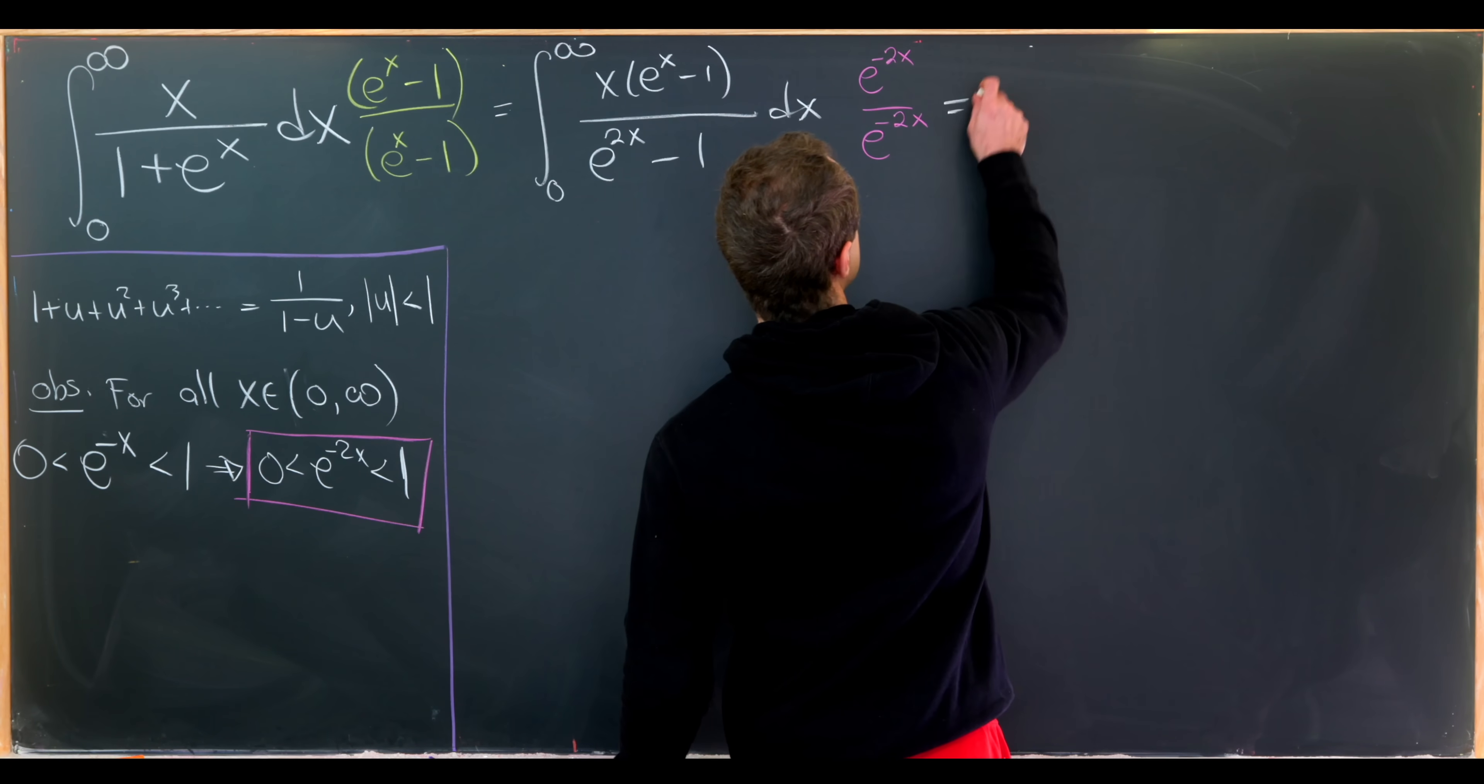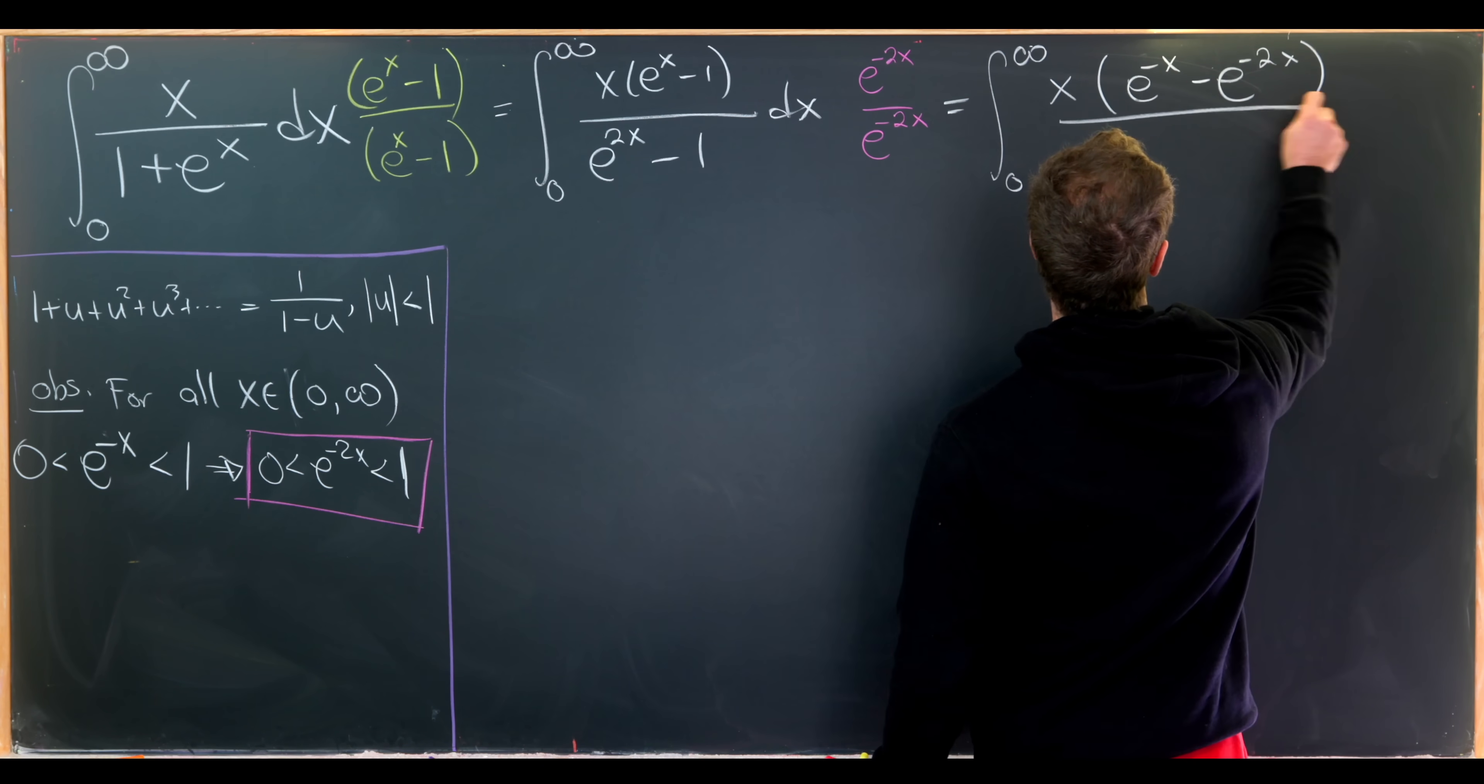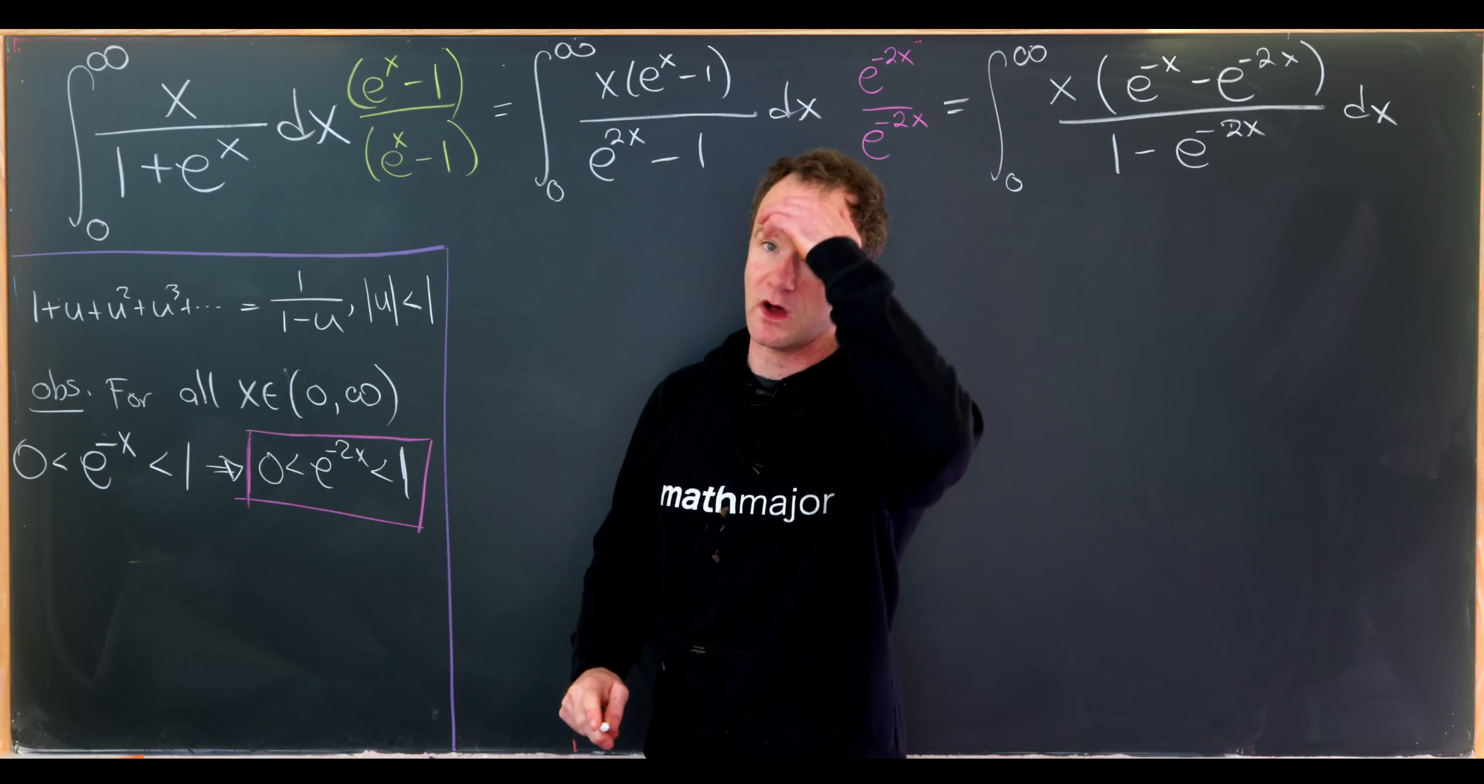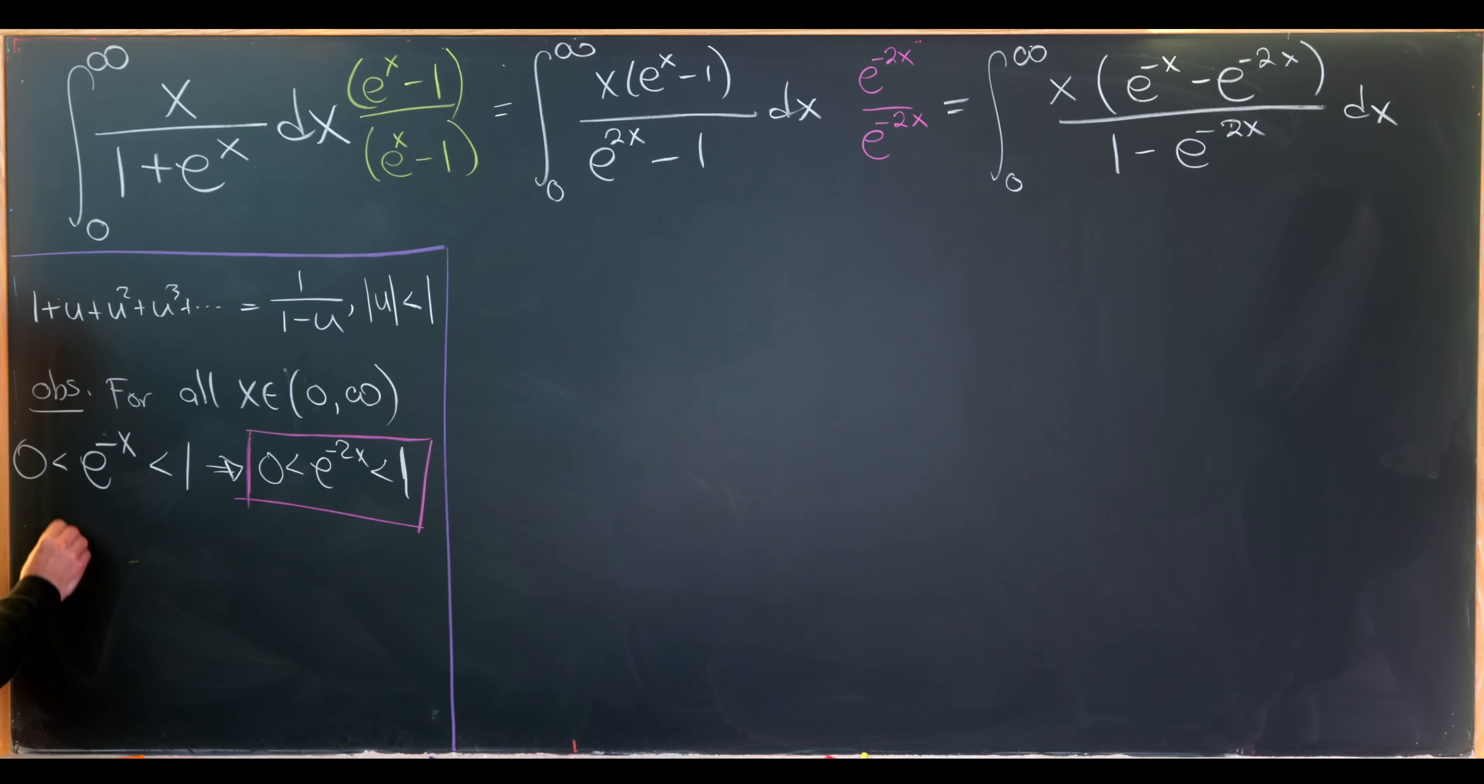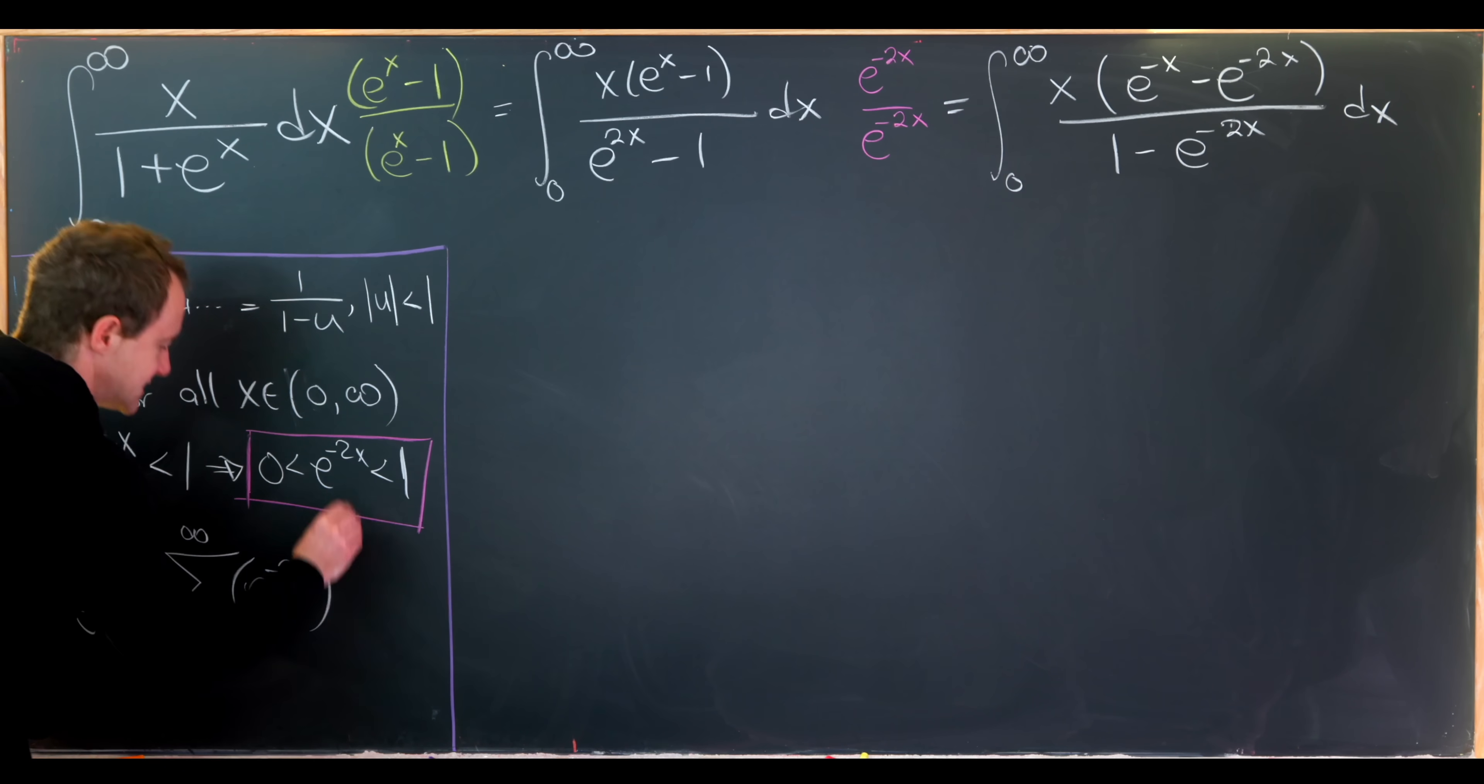But we can fix that by multiplying the numerator and the denominator by e to the minus 2x. And that will be the fix that works in this case. So we have the integral from 0 to infinity of x e to the minus x minus e to the minus 2x over 1 minus e to the minus 2x dx. But now, since e to the minus 2x is between 0 and 1, never equal to 1, we can apply this geometric series formula to this object.